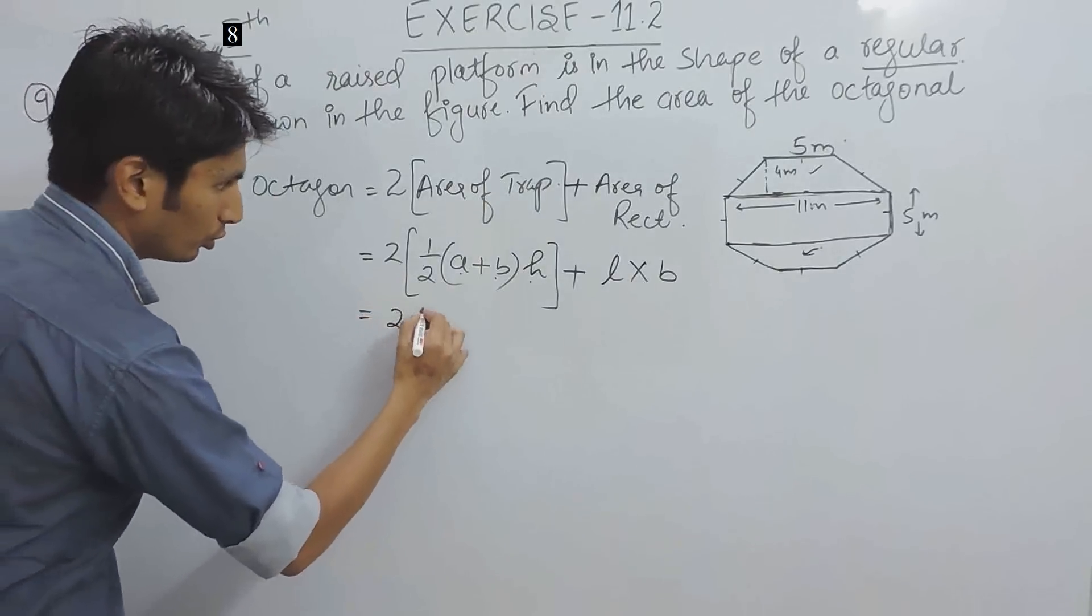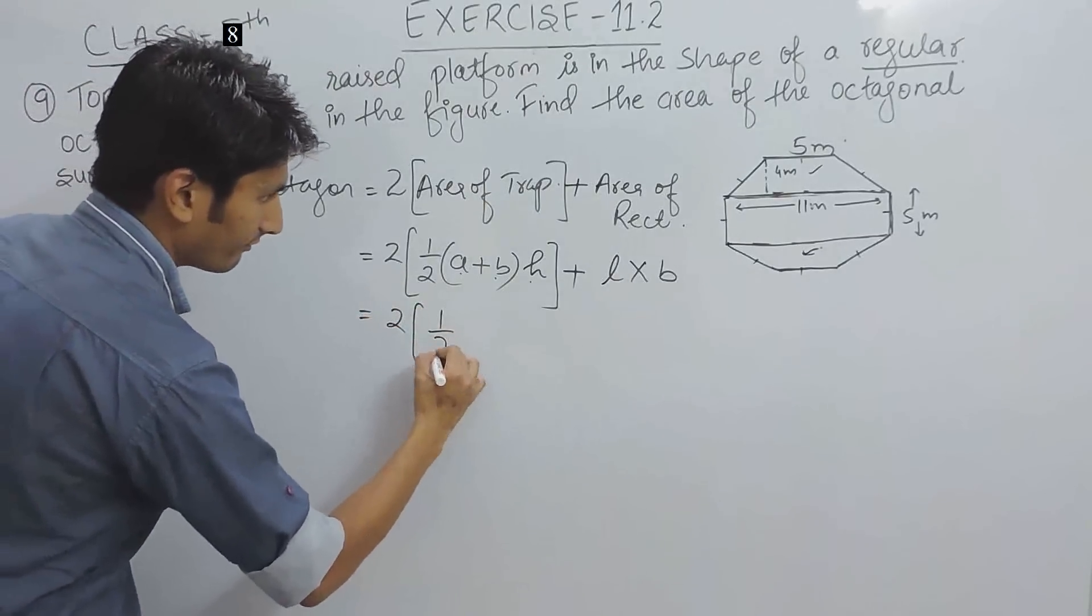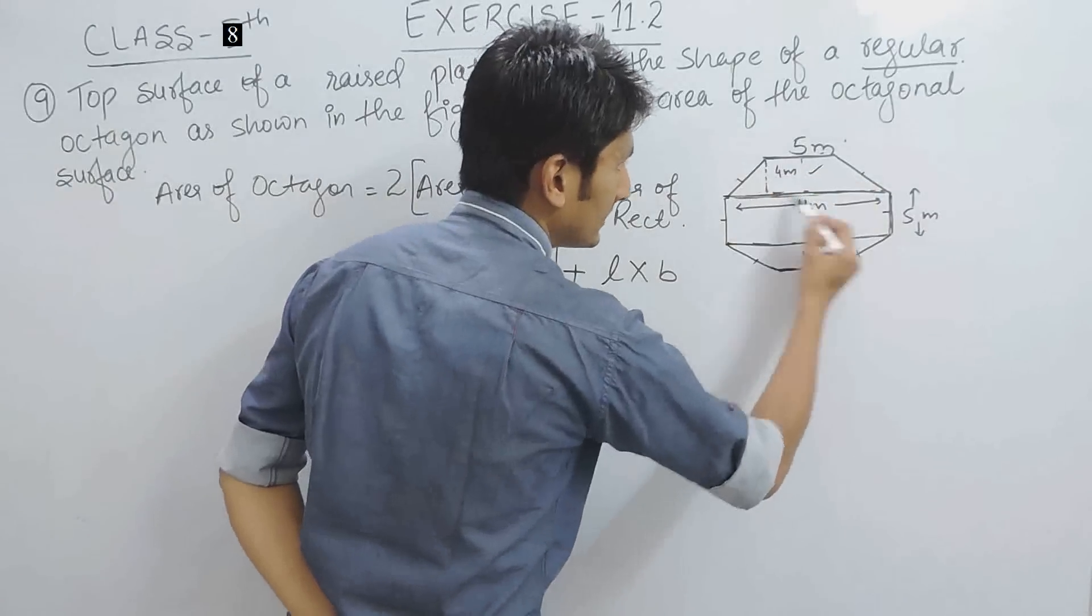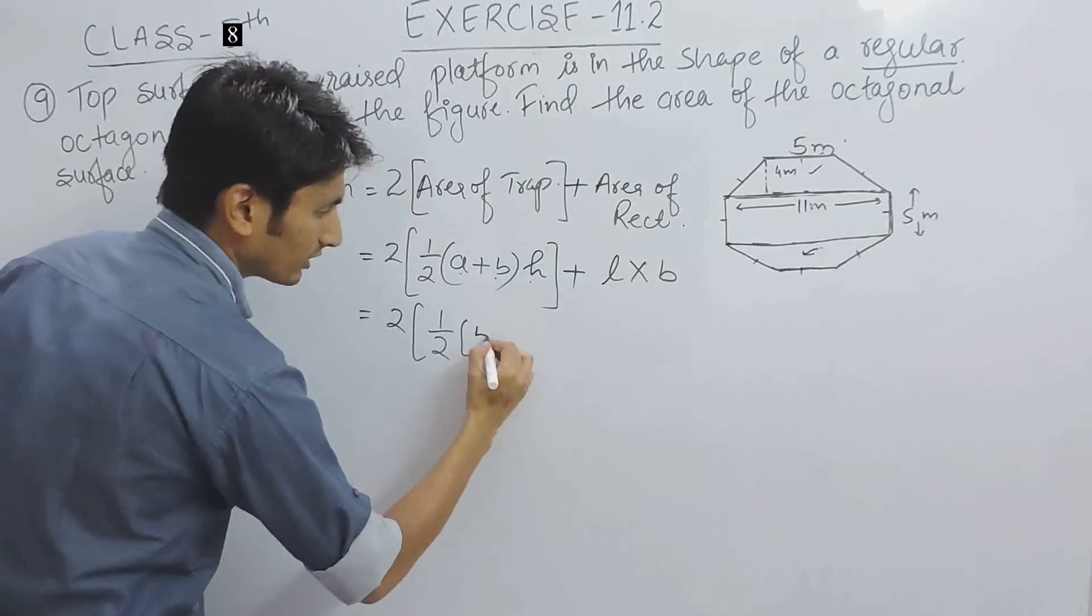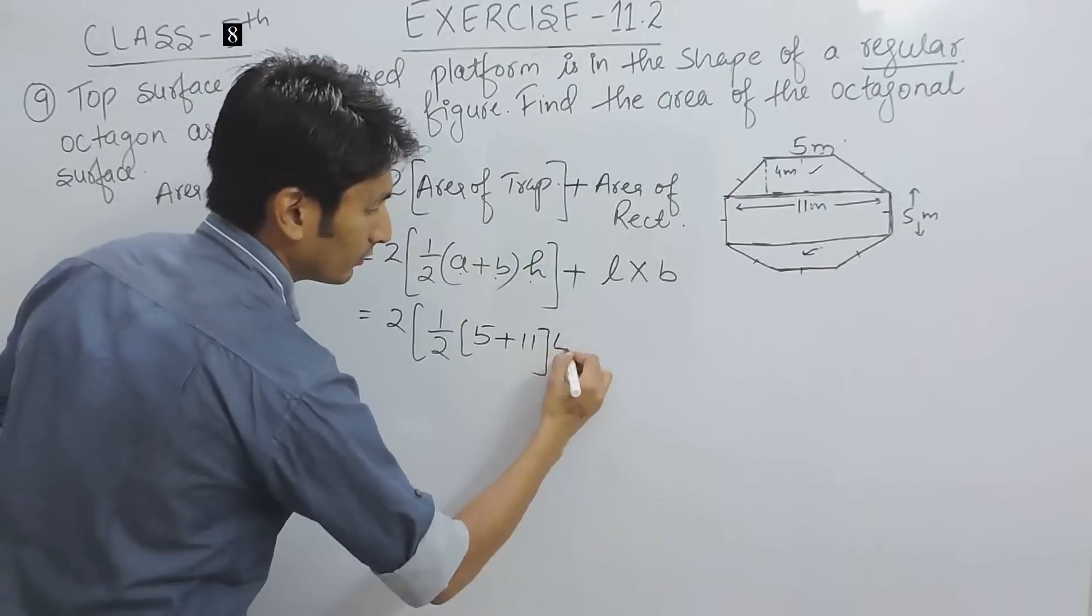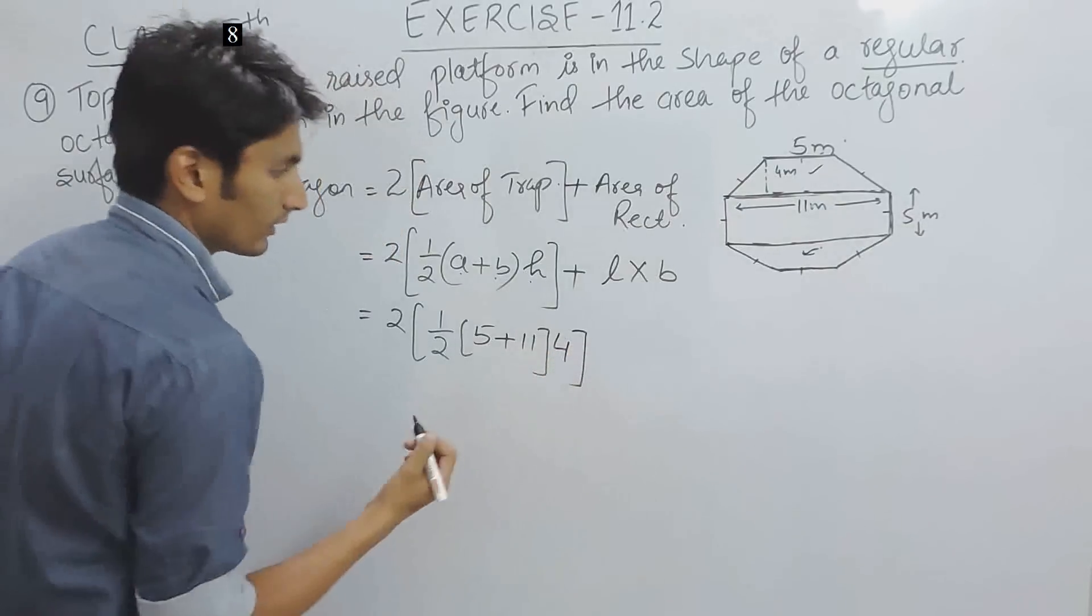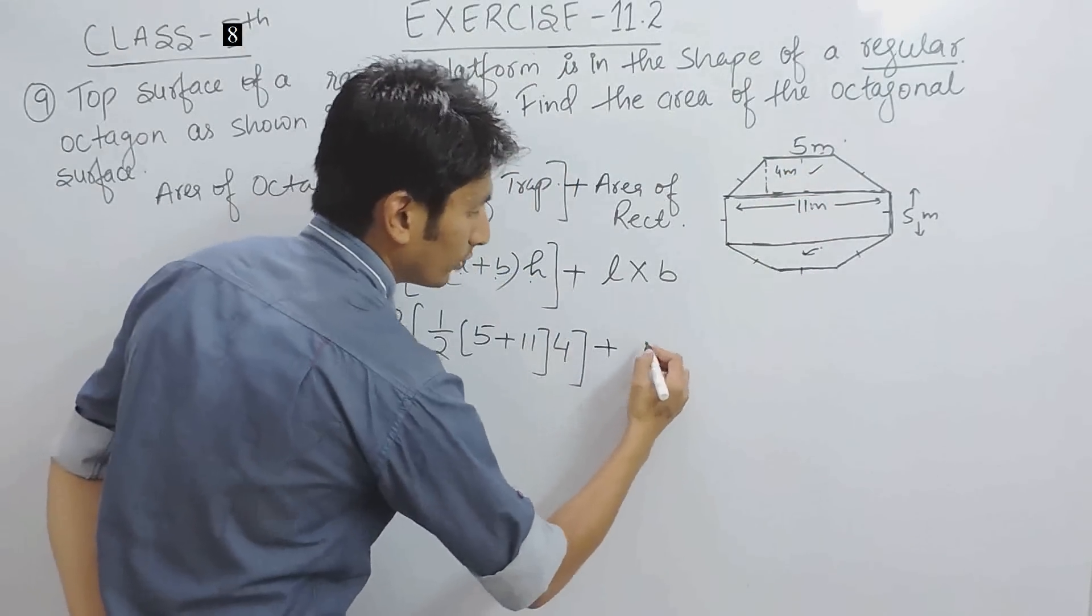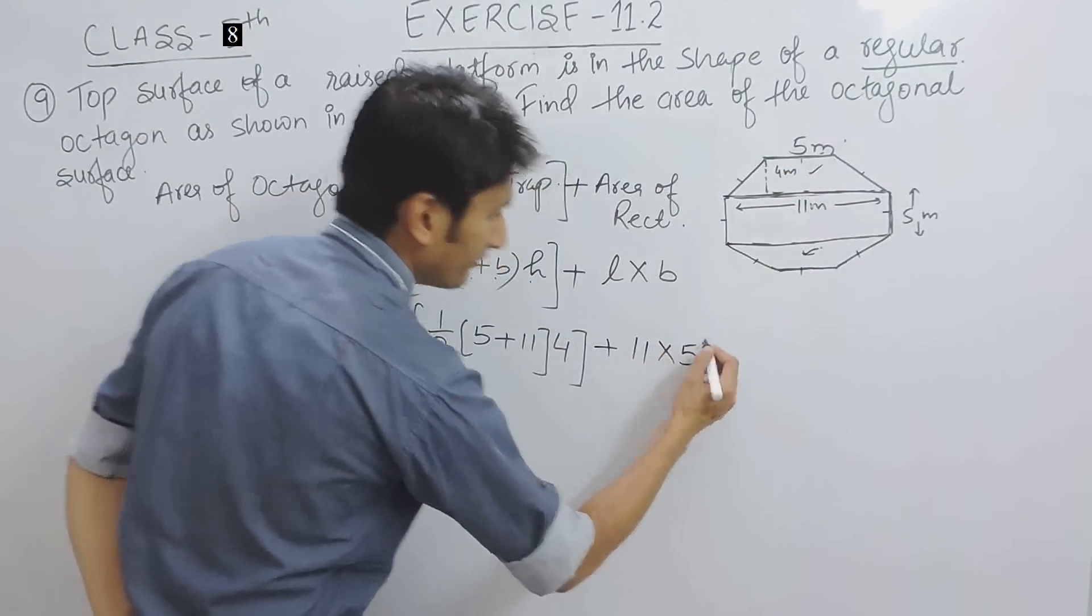This is 2, this is half, sum of parallel sides in trapezium. This is half, this and these are the parallel sides, so sum will be 5 plus 11, height will be 4. The height of the trapezium is 4 plus length of the rectangle is 11, breadth is 5.